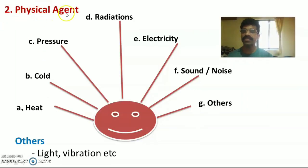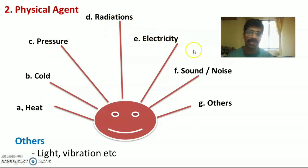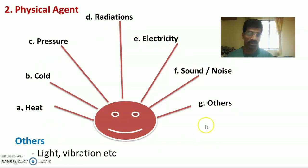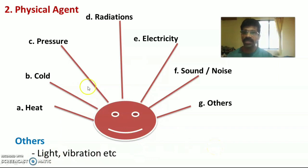The second classification is physical agents. Disease can be produced by various physical agents such as extreme heat, extreme cold, pressure, radiation, electricity, sound, noise, light, and vibration. Excessive or dim light can cause various problems. Physical agents are especially related to occupational diseases.